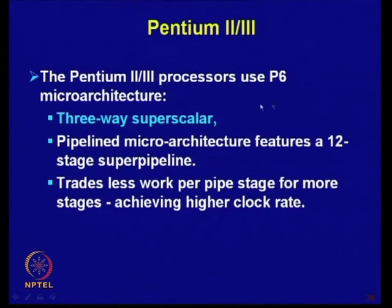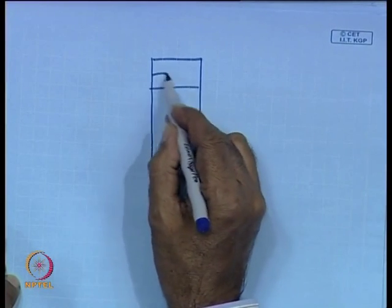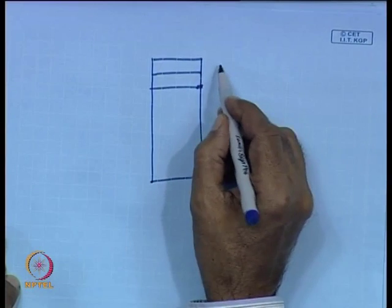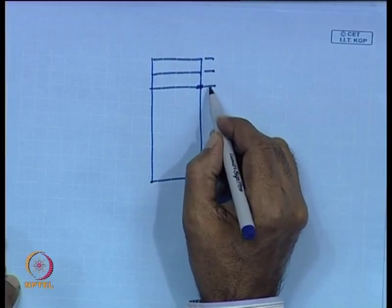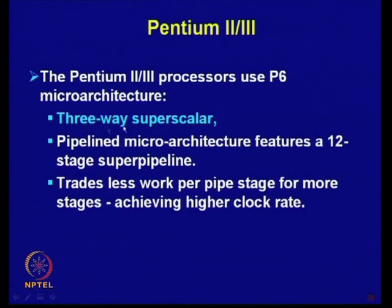Pentium 2 and 3 processors use the Pentium 6 micro-architecture and are three-way superscalar. They feature a 12-stage super pipeline. In a super pipeline, in a single cycle two separate operations can be performed — in half a cycle one operation, and in the other half another operation. This 12-stage pipeline trades less work per stage for more stages, achieving a higher clock rate. More stages means you can use a higher clock frequency.